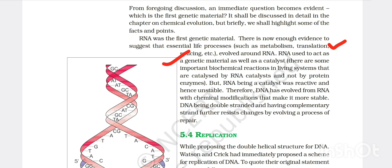RNA used to act as a genetic material as well as catalyst. There are some important biochemical reactions in living systems that are catalyzed by RNA catalyst, not by protein enzymes. But RNA being a catalyst was reactive and hence unstable. Therefore DNA has evolved from RNA with chemical modifications that make it more stable.